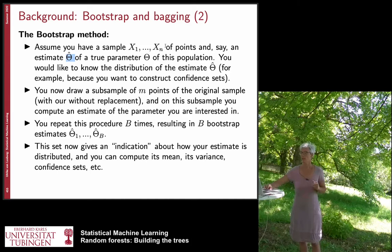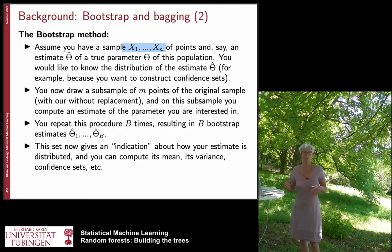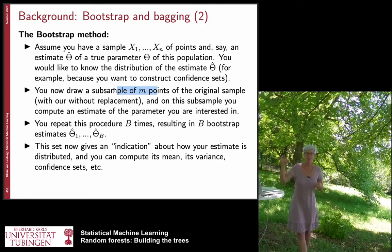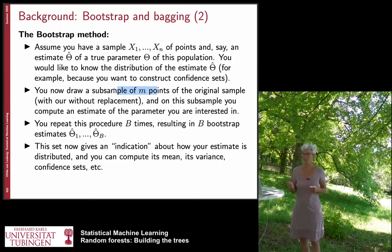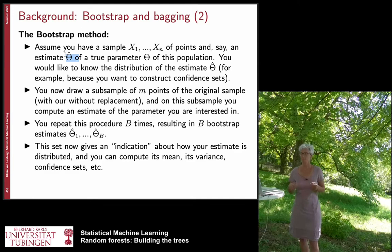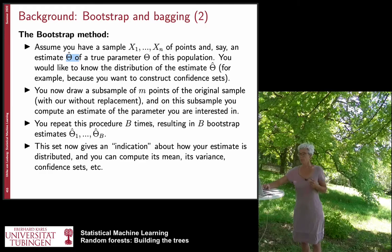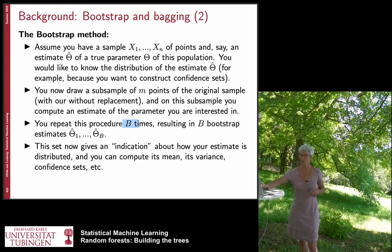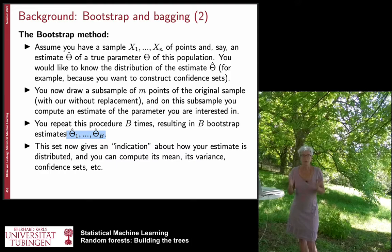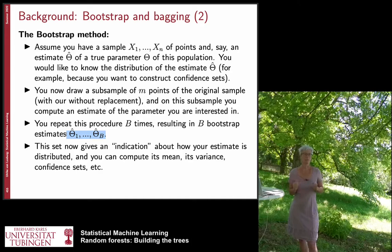If you know the distribution of your sample points, it is sometimes possible to analytically compute the distribution of theta-hat and derive confidence intervals. But if you don't know anything about the distribution of your data points, then you need to do it empirically. Here is what we do: we draw a subsample of M points from our original training sample — with or without replacement, depending on the approach — and compute the estimate on this subsample. We repeat this procedure B times, ending up with B estimates theta-1-hat through theta-B-hat.